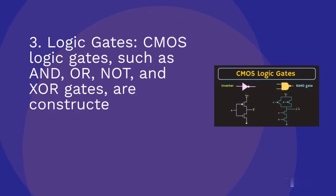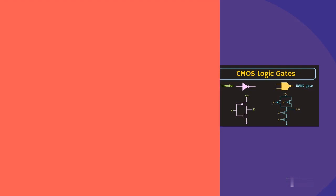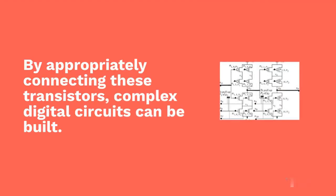Logic gates: CMOS logic gates, such as AND, OR, NOT, and XOR gates, are constructed using combinations of N-MOS and P-MOS transistors. By appropriately connecting these transistors, complex digital circuits can be built.